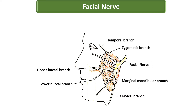The cervicofacial branch divides into the buccal branch — which further subdivides into upper and lower buccal — the marginal mandibular, and the cervical branches. These branches pass through the anteromedial surface and then emerge along the anterior border and apex of the parotid gland.